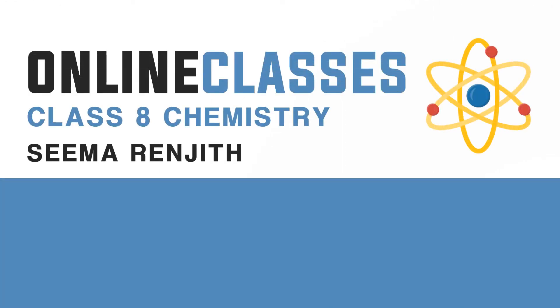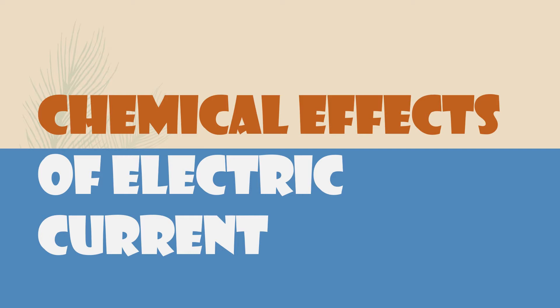Hello children, welcome to Class 8 Chemistry online classes, Chapter 14: Chemical Effects of Electric Current. In the last class we discussed whether liquids conduct electricity, the heating effect of electricity, and the magnetic effect of electricity through activities. We separated conducting liquids as poor conductors and good conductors using those effects. Today we will discuss the important effect — the chemical effect of electric current.